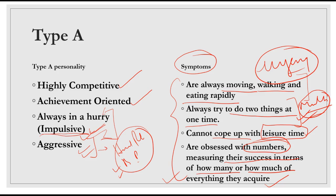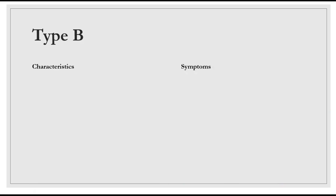So let's talk about Type B. First the symptoms, and then we will talk about the characteristics. The first symptom is they never suffer from urgency. They are not in any urgency, they are always in a very relaxed mood. And they can relax without guilt.